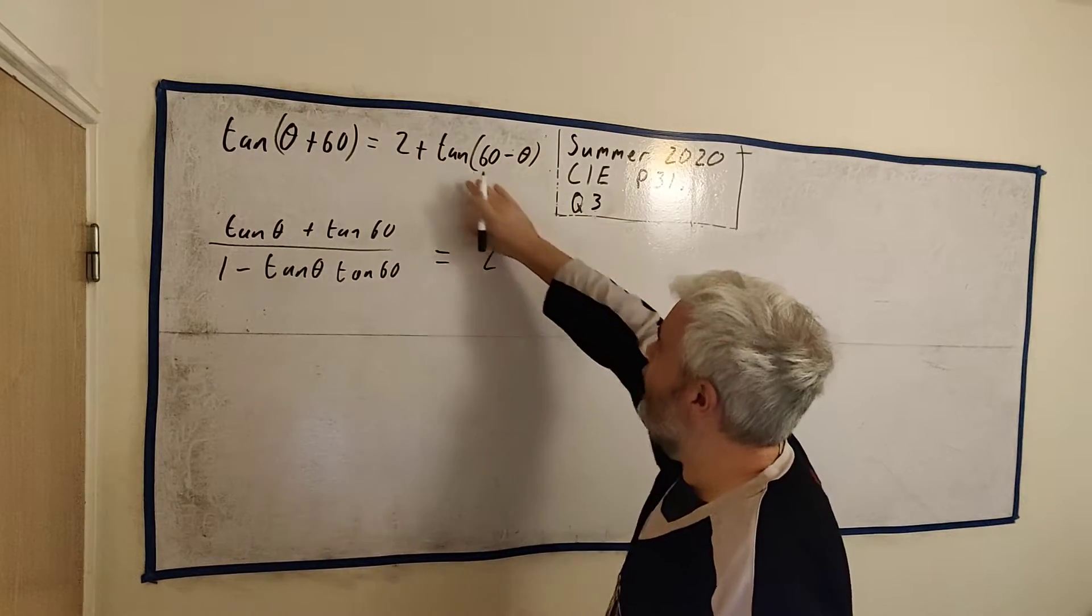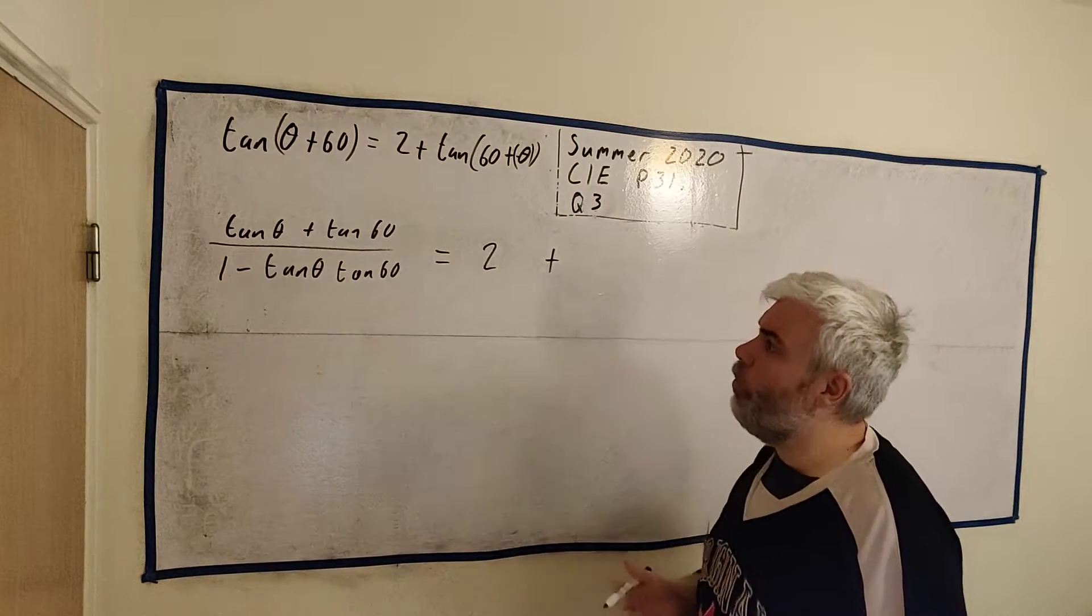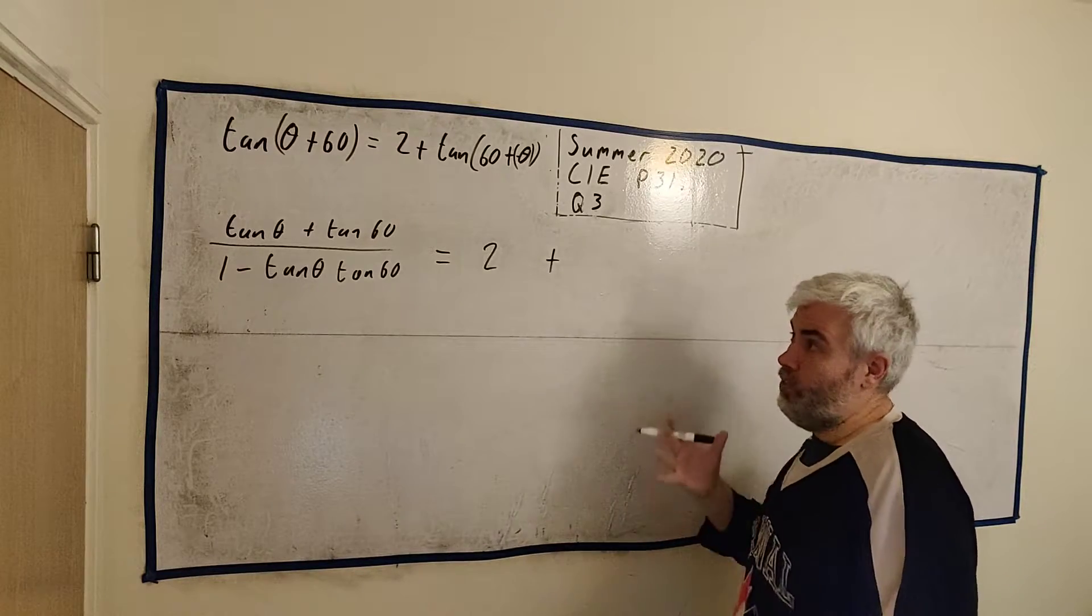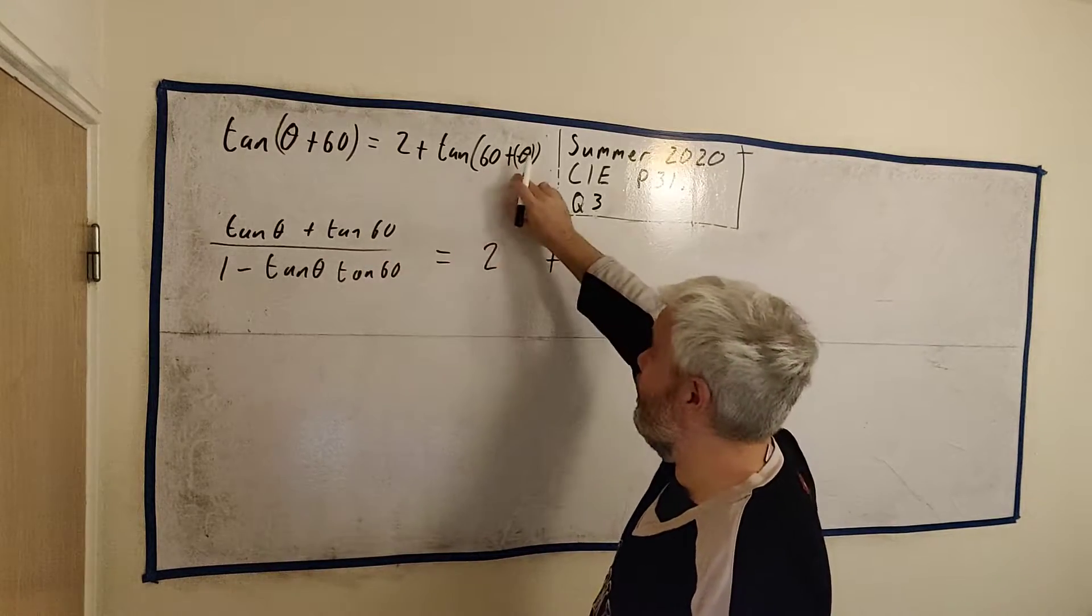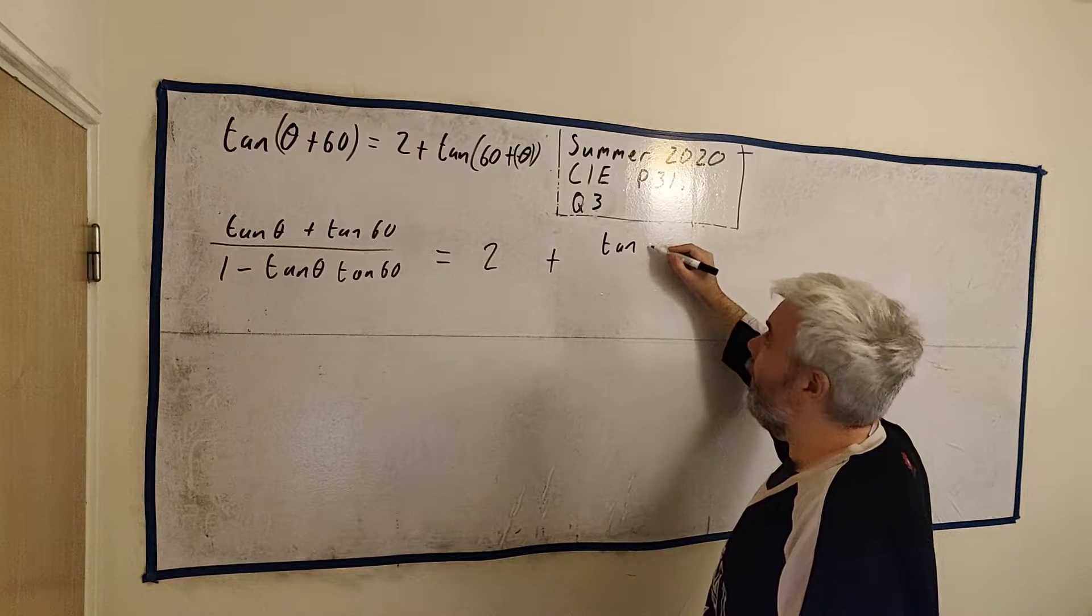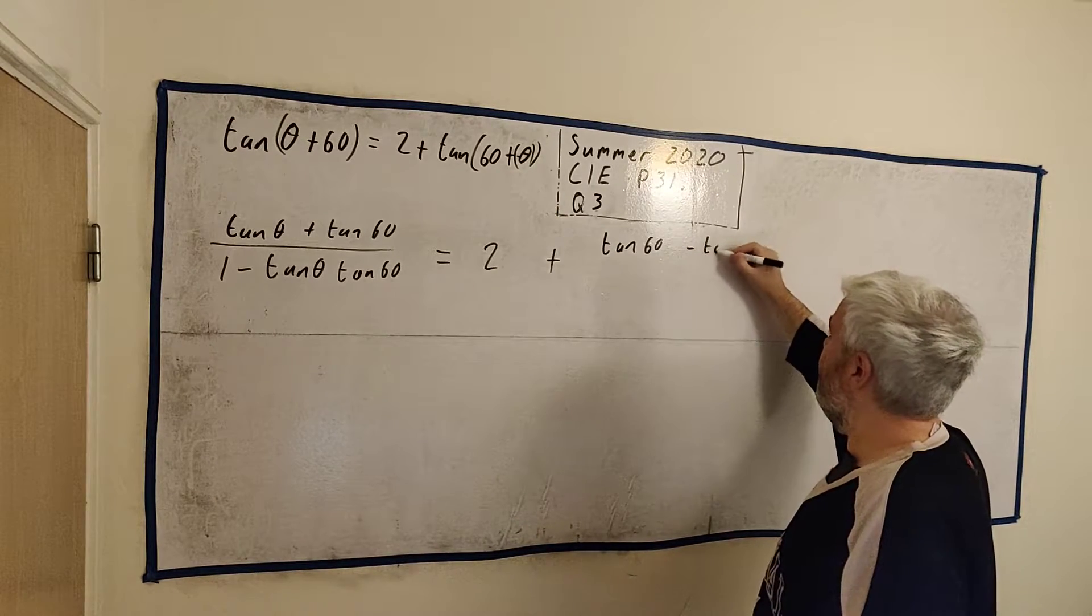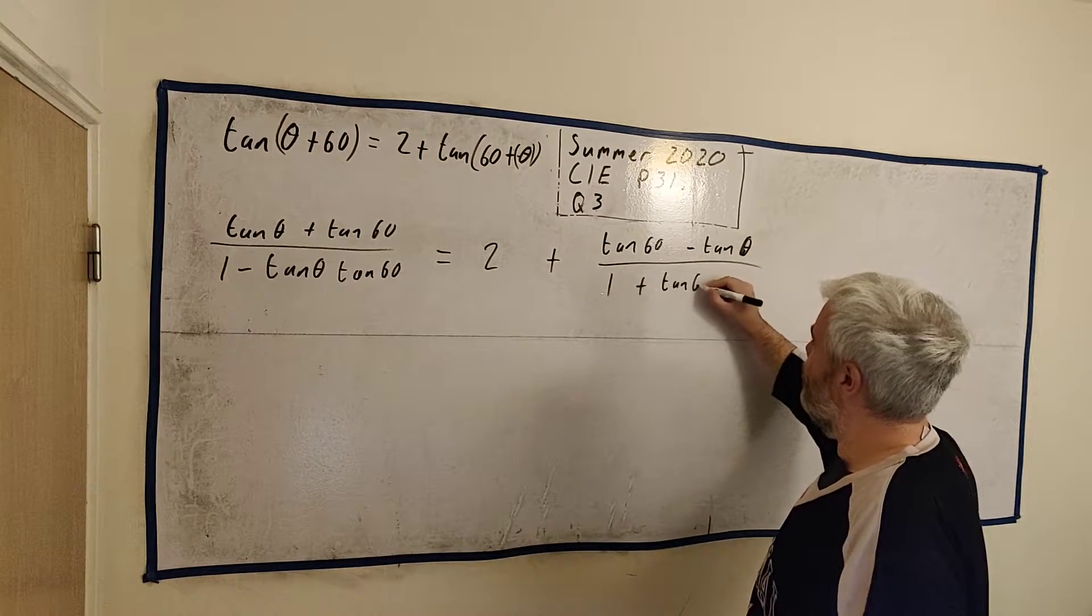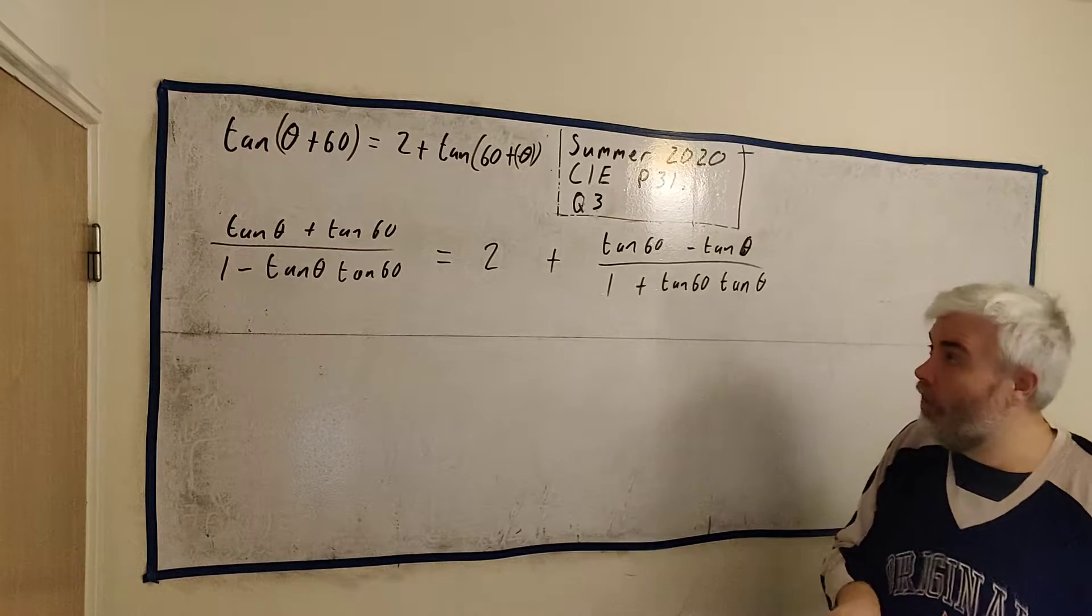And we can rewrite this whole equation this way. Equals 2 plus this guy is also the addition of two things, plus a minus theta. And we know what happens at tan(-θ) is the same as -tan θ. So we just use the same formula. The other version will just give us tan 60 - tan θ divided by 1 + tan 60 over tan θ.